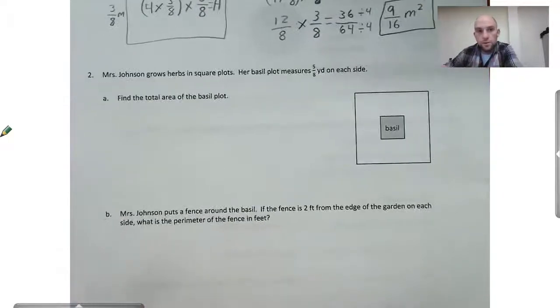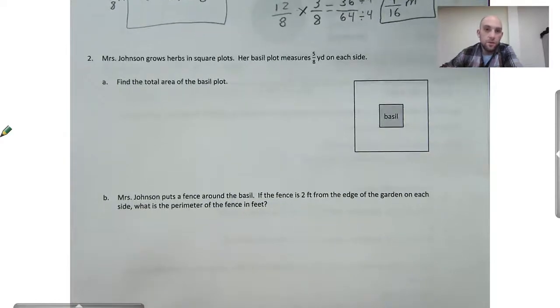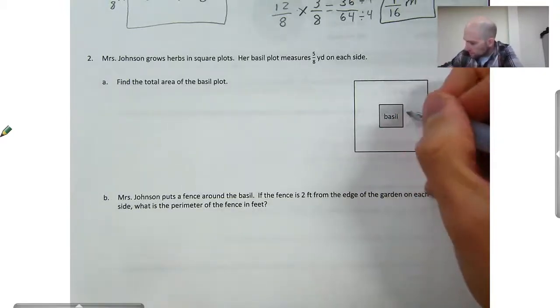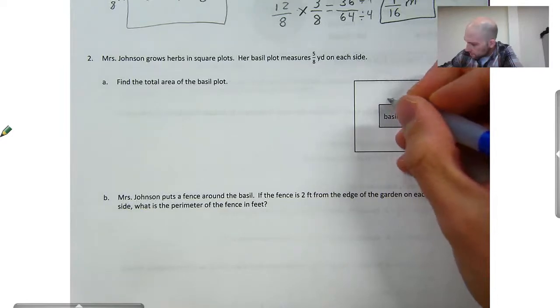Number two says Mrs. Johnson grows herbs in square plots, so like plots of land. Her basil plot measures five-eighths of a yard on each side. Find the total area of the basil plot. So this will be five-eighths, five-eighths, five-eighths.